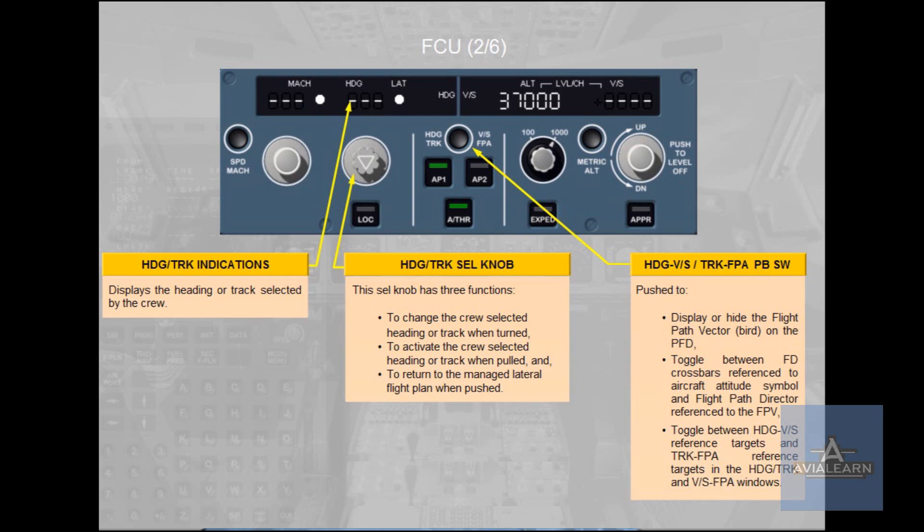The Heading Vertical Speed and Track Flight Path Angle Push Button Switch. Push to: first, display or hide the Flight Path Vector on the Primary Flight Display. Second, toggle between Flight Director Crossbars reference to Aircraft Attitude Symbol and Flight Path Director reference to the Flight Path Vector. Third, toggle between Heading Vertical Speed reference targets and Track Flight Path Angle reference in the Heading Track and Vertical Speed Flight Path Angle Windows.